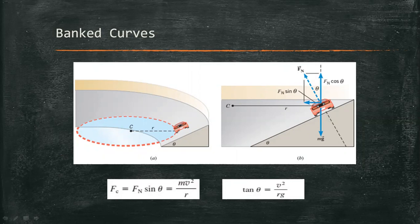So in getting the centripetal force in circular motion along a banked curve, we have this formula: centripetal force is equal to the normal force times sin theta.